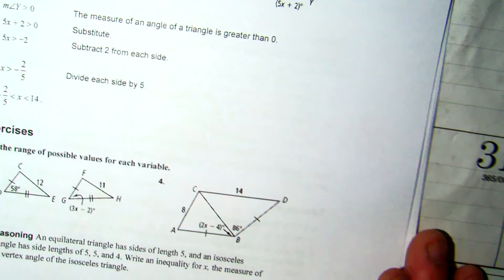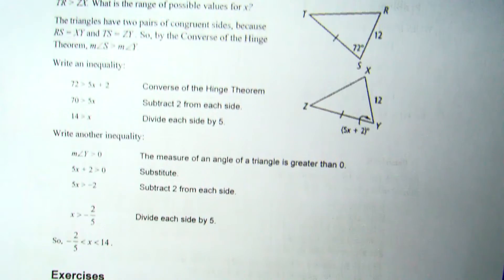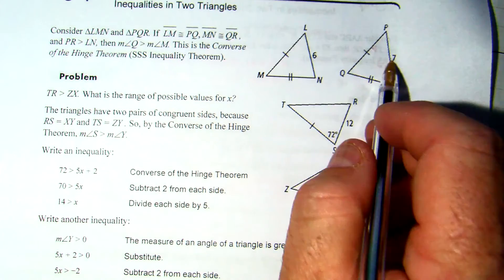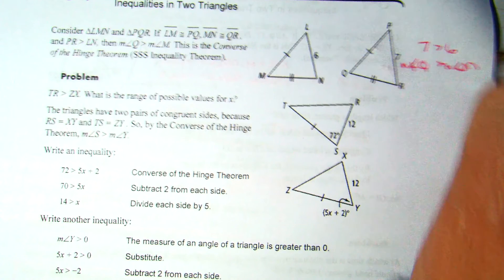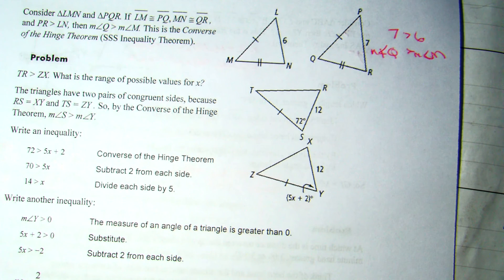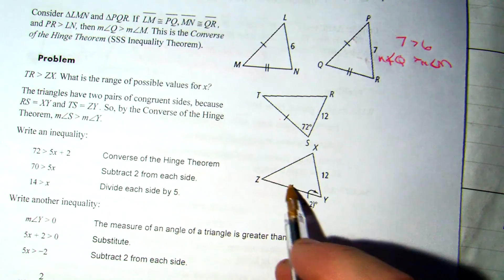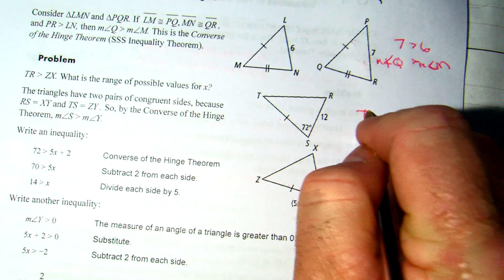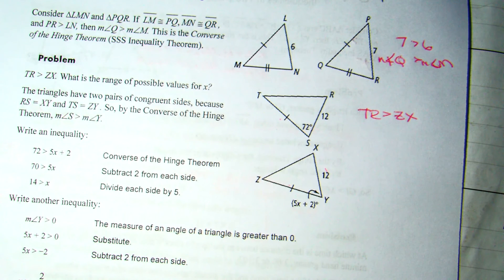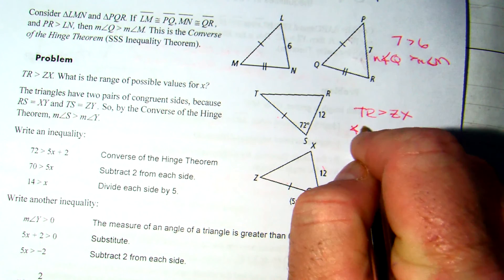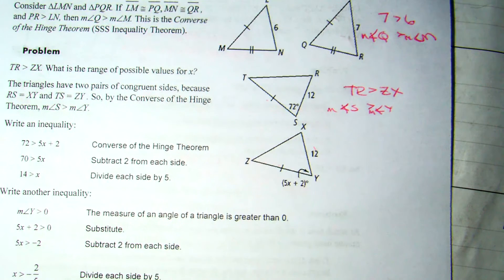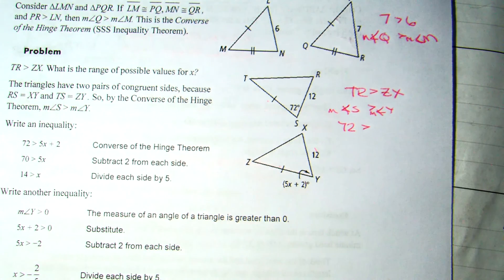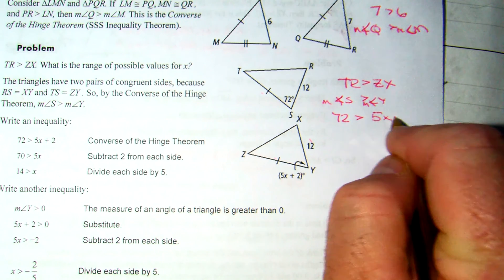The converse works as well. So 7 is greater than 6. Therefore, the measure of angle Q is greater than the measure of angle F. So if I look at the two sides, congruent 12 and 12, they tell me TR is greater than ZX. If TR is greater than ZX, opposite TR would be angle S. Opposite to ZX would be angle Y. So the measure of angle S would be greater than the measure of angle Y. The measure of angle S is 72. The measure of angle Y is 5X plus 2.